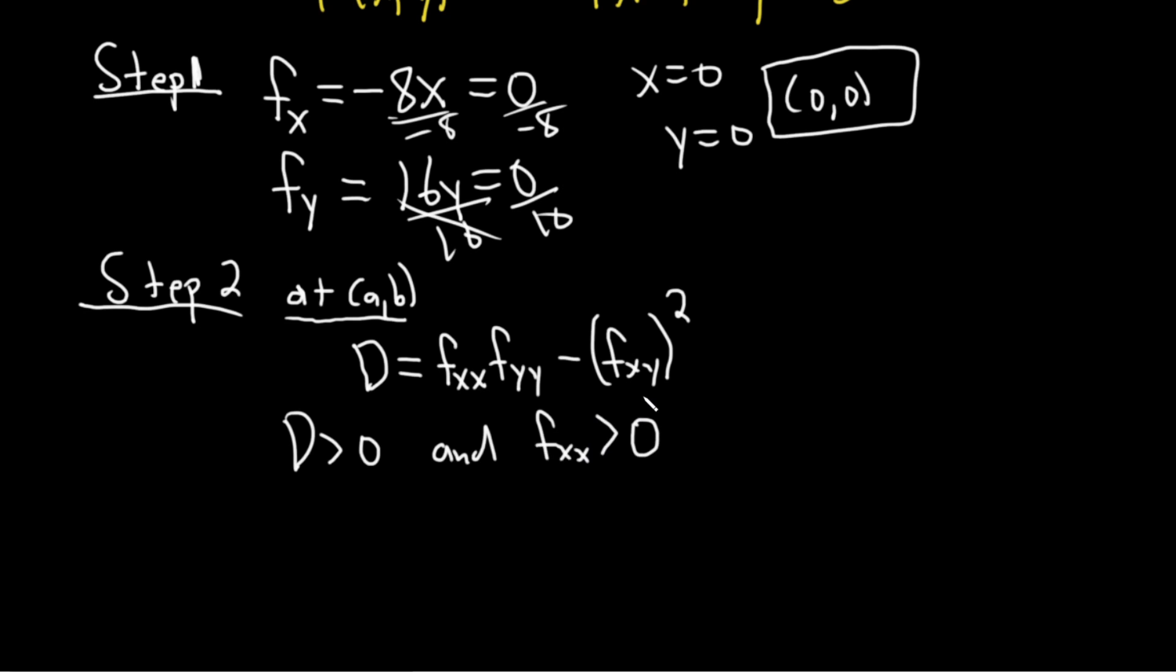If big D is positive and fxx is less than 0 it's backwards. In this case you have a max again at AB.